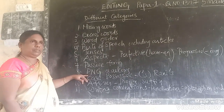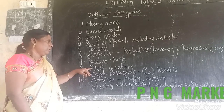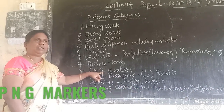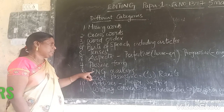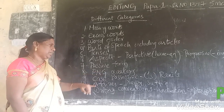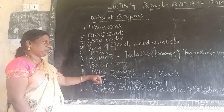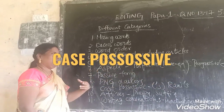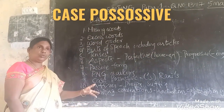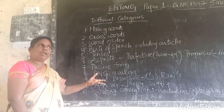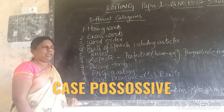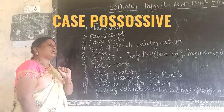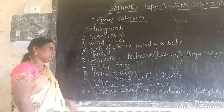Then the PNG markers — PNG stands for person, number, gender. I am going to deal in detail with person, number, and gender. The case — that is possessive: Raman's, Rani's, Raju's. There we have to use apostrophe S. It is Rana's book, it is Rani's book — apostrophe S should be used.